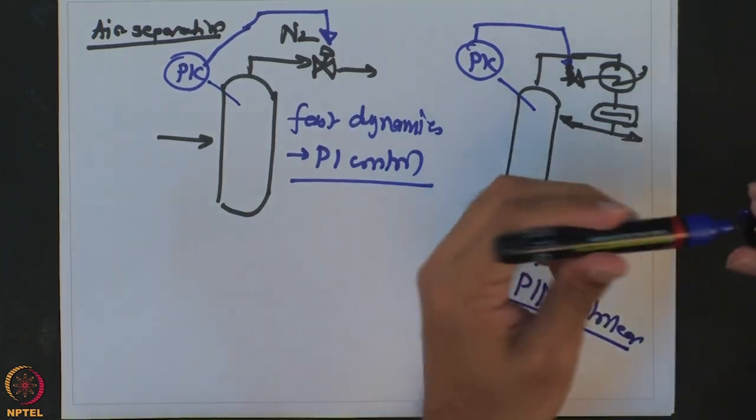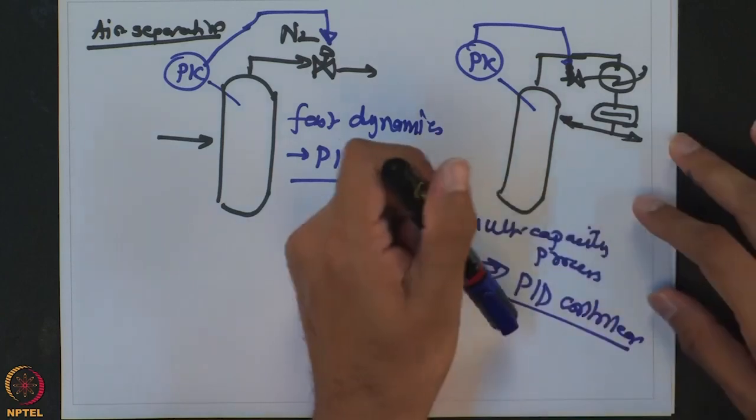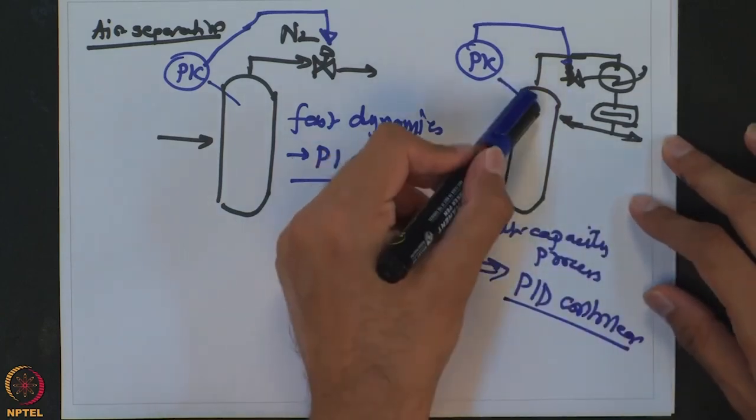Having said that, not every distillation pressure controller will be a PID controller, because you also have to weigh in whether offset is acceptable or not. A lot of times in high-pressure distillation, a small offset in pressure is not going to affect the extent of separation, so you may even go with a simple P controller.